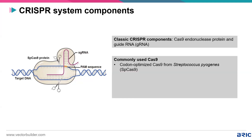One commonly used Cas9 is codon-optimized Cas9 from Streptococcus pyogenes, modified for different species like hCas9 in humans and zCas9 in zebrafish. Another Cas9 used specifically with adeno-associated virus (AAV) delivery is SACas9. Both induce double-stranded breaks in DNA. When you don't want double-stranded breaks, you use catalytically inactive Cas9, or dCas9. There are also D10A nickases, which introduce single-stranded breaks as opposed to double-stranded breaks introduced by typical Cas9.